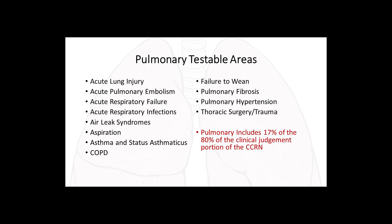The pulmonary testable areas on the CCRN exam include acute lung injury, acute pulmonary embolism, acute respiratory failure, acute respiratory infections, air leak syndromes, aspiration, asthma and status asthmaticus, COPD, failure to wean from the ventilator, pulmonary fibrosis, pulmonary hypertension, and thoracic surgery and trauma. The pulmonary portion includes 17% of the 80% clinical judgment portion of the CCRN exam.